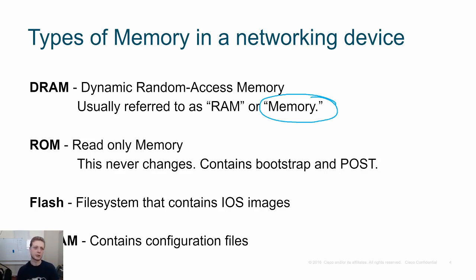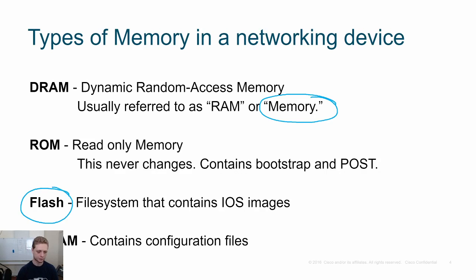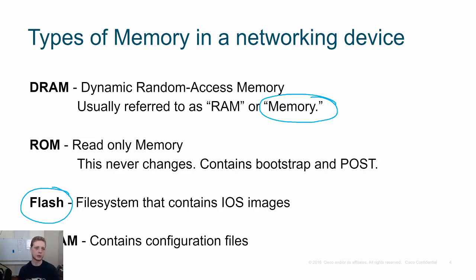DRAM is super fast. This is where your processor is going to keep the files it's working on. For example, if you open an Excel spreadsheet or a PowerPoint presentation, that file is going to go from your flash memory — or maybe an old school hard drive — from your storage into your memory. Memory is much, much faster than your storage, so the CPU can communicate with it very, very fast. That's the purpose of DRAM.